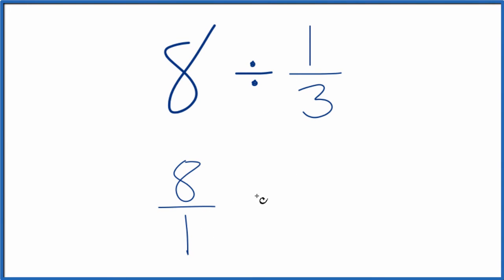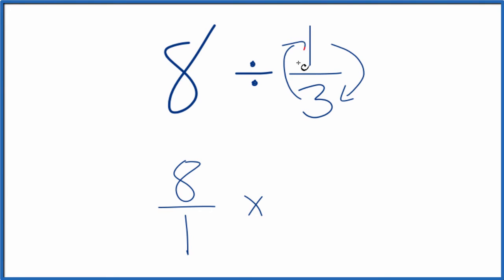Instead of division, let's multiply by the reciprocal of 1 third. To take the reciprocal of a fraction, we move the numerator to the bottom and the denominator to the top. So we have 3 over 1 — that's the reciprocal of 1 third.